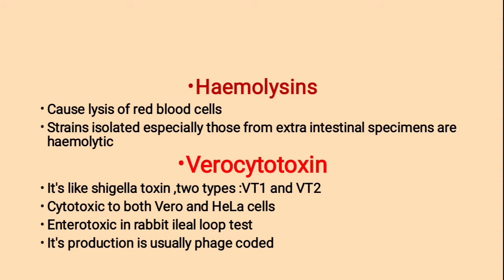Third toxin: Verocytotoxin. It is like Shiga toxin. There are two types: VT1 and VT2. They are cytotoxic to both Vero cells and HeLa cells. They are enterotoxic in rabbit ileal loop tests and their production is usually phage-coded.